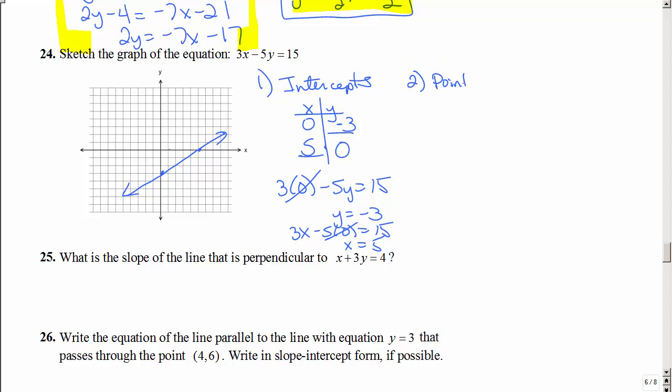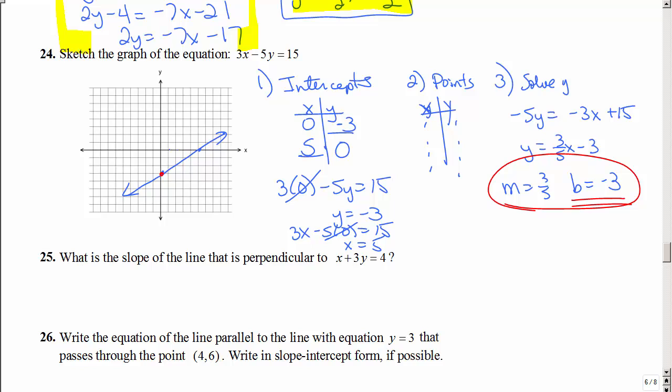Another method is just to pick two points and make a table of values. Make an x and a y and plug anything you want. I'm not going to do that method. The third method is to solve for y. I'm going to subtract 3x from both sides, and I'm going to divide by negative 5. And I could say, hey, the slope is 3 fifths and my y intercept is negative 3. So could I graph it that way? Well negative 3, same thing. Slope is rise over run, and I get the same line. So lots of different methods, but what we're grading is the graph of that line.